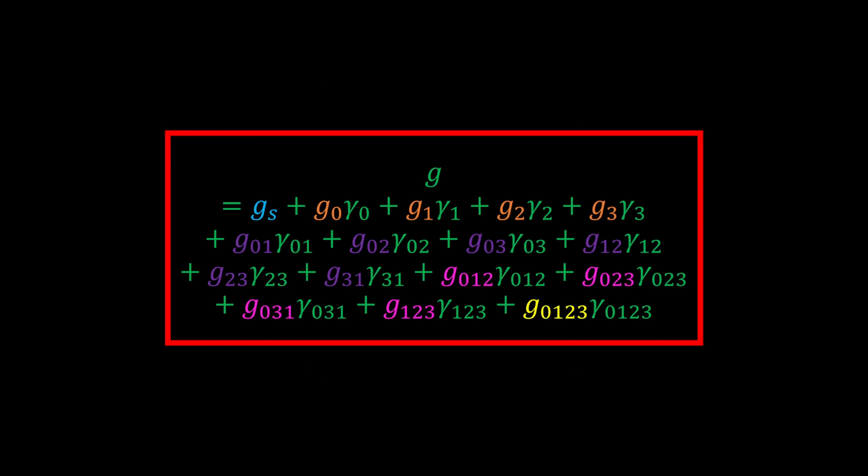A general element of the spacetime algebra therefore has this fairly meganormous form — yes, I made that word up, and it is awesome. The component of the pure scalar part is blue, while for the vectors it's orange, for the bivectors it's purple, for the trivectors it's pink, and for the quad vector it's yellow.